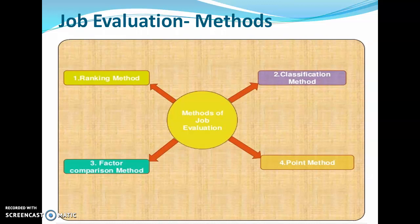The fourth and last method is the point rating method, which is also a stepwise process. In the first step, we select various factors such as education, experience, initiative, physical effort, mental effort, responsibility for equipment, responsibility for a process, responsibility for the work of others, working conditions, hazards, adaptability, and attitude for learning. These are the various factors defined in this method.